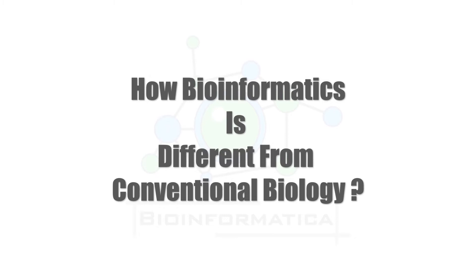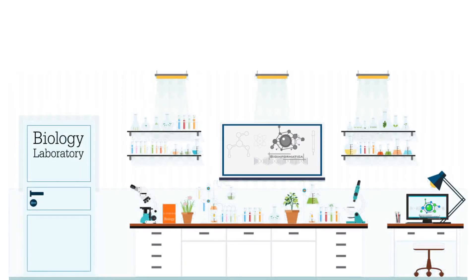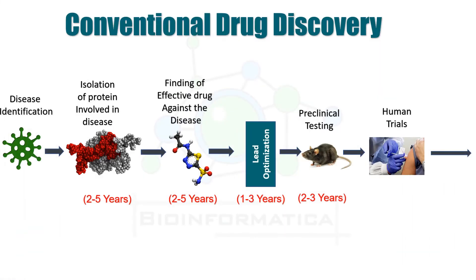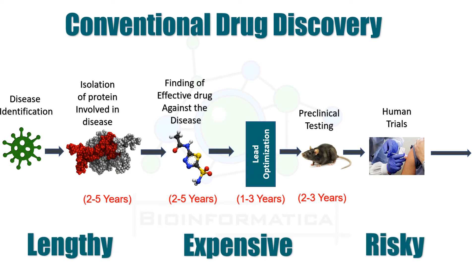Let us discuss some of the drawbacks of conventional methods. Conventional fields generally require a sophisticated lab and expensive utilities and model organisms. Experiments are generally long, delicate, and sometimes risky to the researcher. For example, in conventional drug discovery, after disease identification, isolation of the protein takes about 2 to 5 years. Finding an effective drug also takes 2 to 5 years. Lead optimization and preclinical testing combined take about 3 to 6 years before human trial and drug approval. It also requires millions in funding and poses health risks to researchers. So basically, it is a lengthy, expensive, and risky process with a high failure rate.